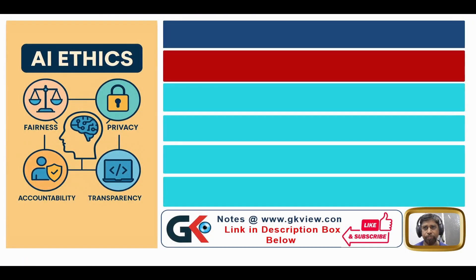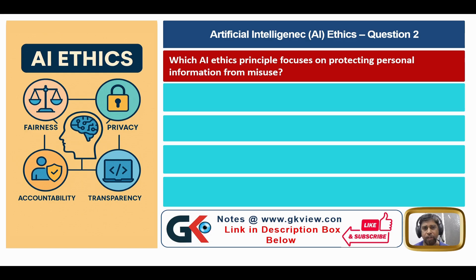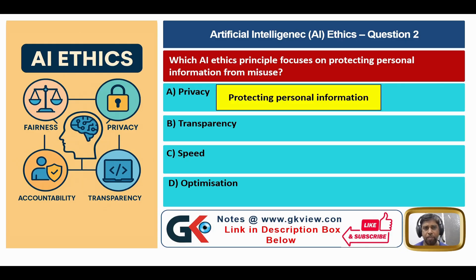Question number two: which AI ethics principle focuses on protecting personal information from misuse? Option A: privacy. Option B: transparency. Option C: speed. Option D: optimization. Option A — privacy — means protecting personal information.